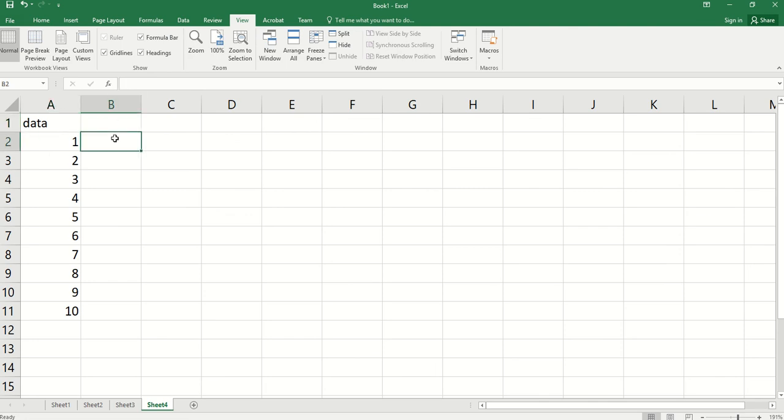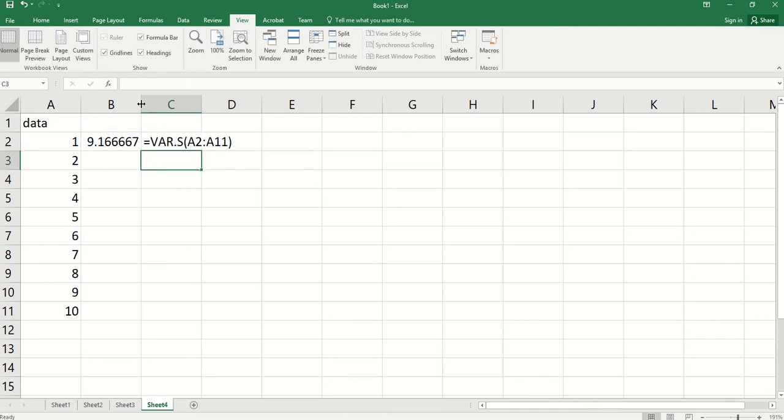First variance, we use var.s. S refers to sample. So that's it. You can see the formula used.